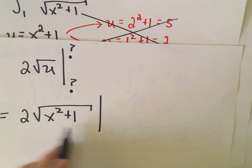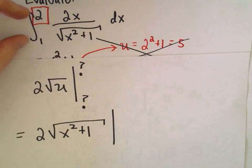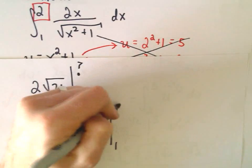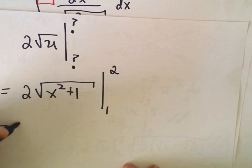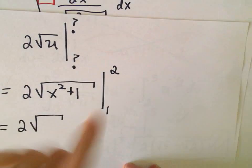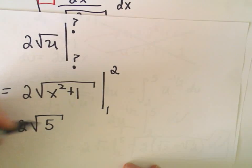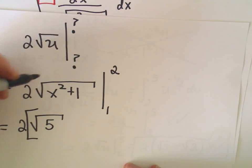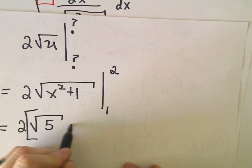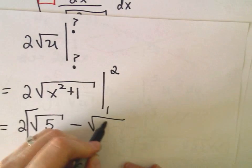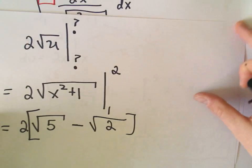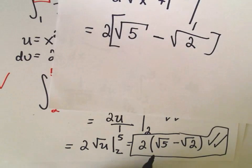So we said u was x squared plus 1. So you're back to the original variable, which was x. Now go back to the original limits of integration, from 1 to 2. And if you plug that in, you would get 2 times the square root of 2 squared plus 1, which would be 5. And then factor the 2 out minus, if you plug 1 in, you would get square root of 2, which is the exact same thing we got before.